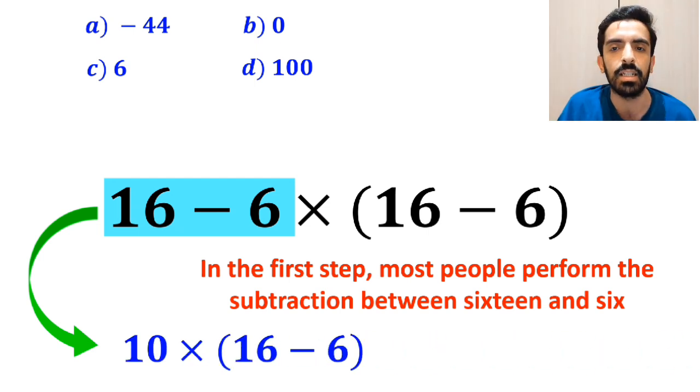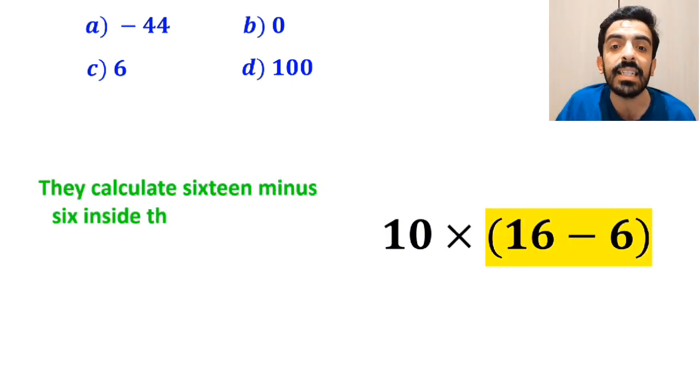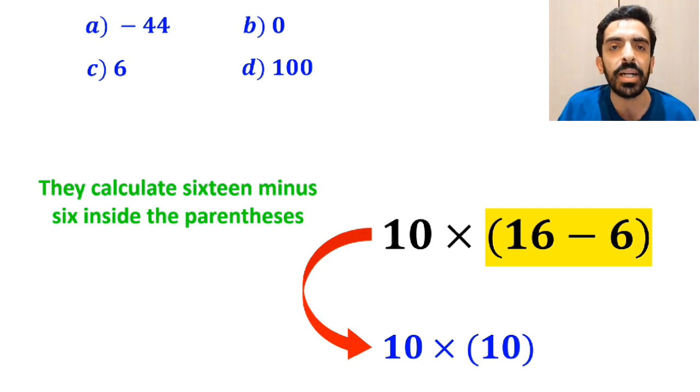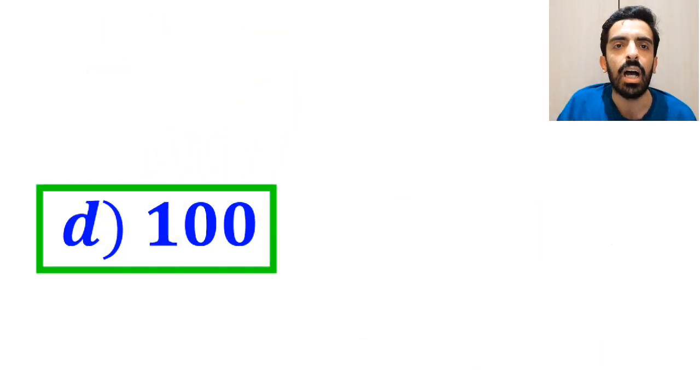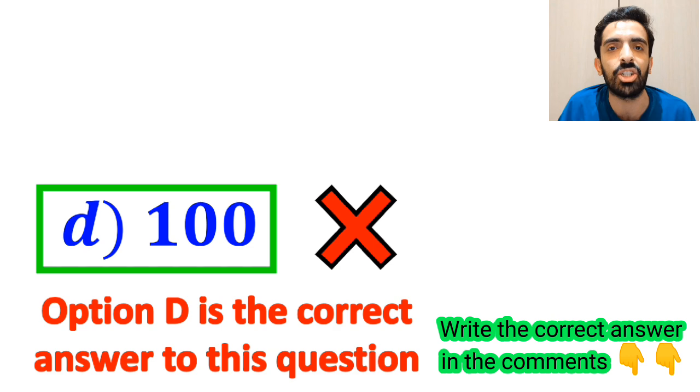And the next step, they calculate 16 minus 6 inside the parentheses, which becomes 10 multiplied by 10. And finally, the value of this expression must be equal to 100. Then without any hesitation, they quickly say that option D is the correct answer to this question. However, it's not the correct answer to this question.